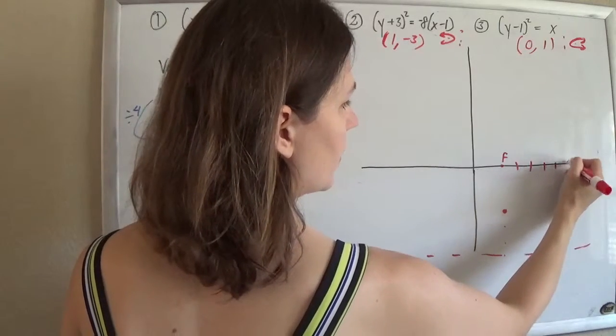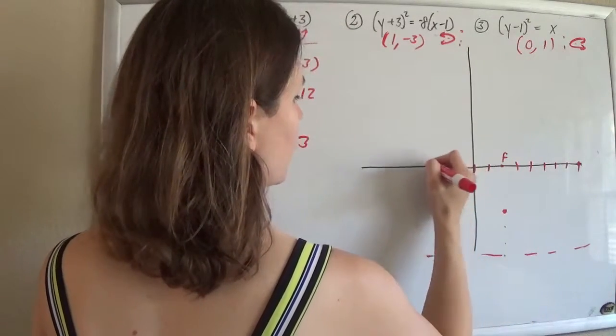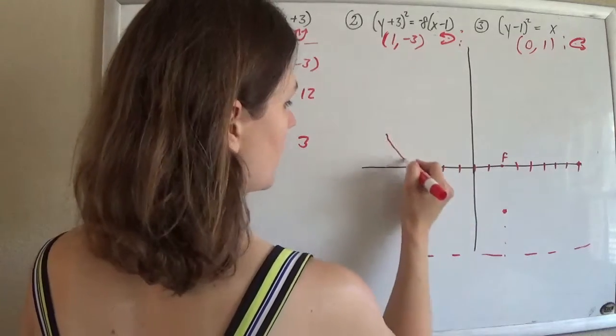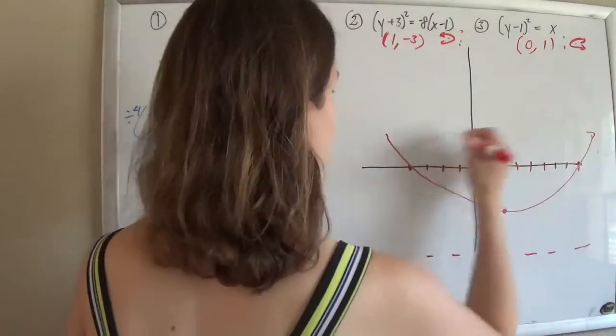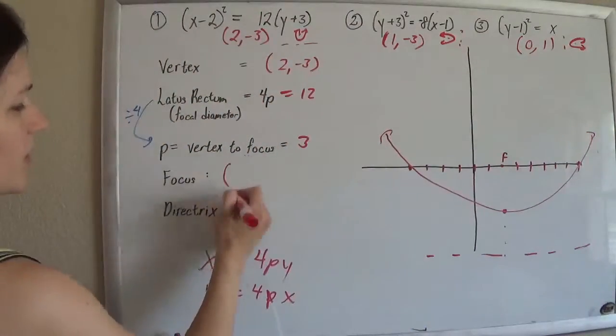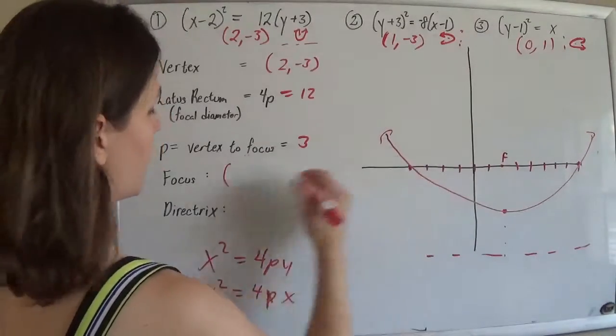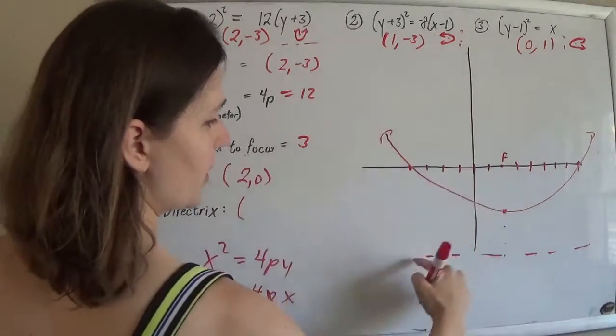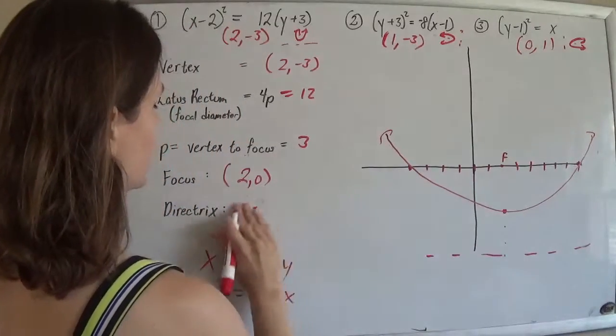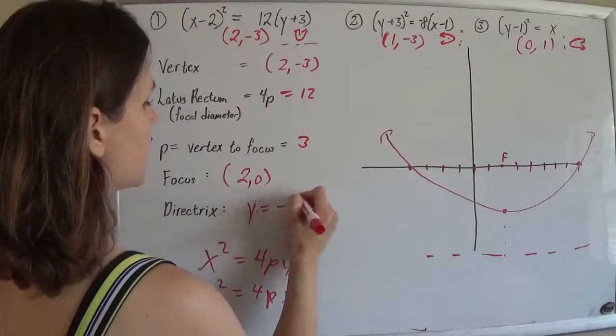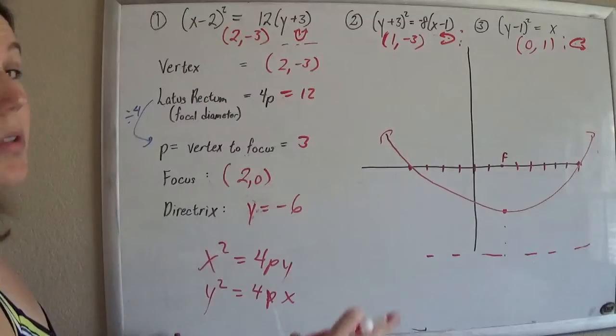1, 2, 3, 4, 5, 6. 1, 2, 3, 4, 5, 6. And there he is, a nice fat parabola. So you can see when you graph that the focus ended up at the point 2, 0, and the directrix ended up at this line y equals negative 6. The picture goes a long way.